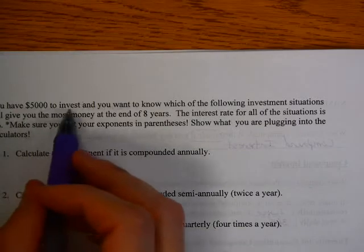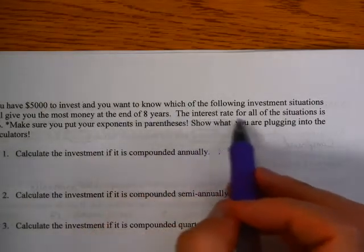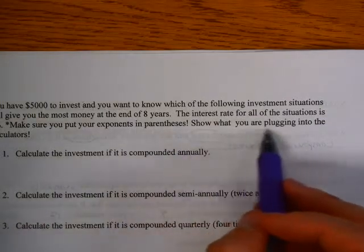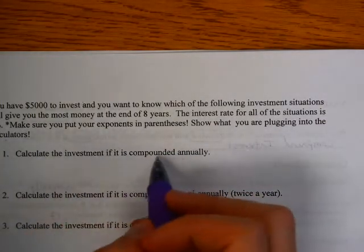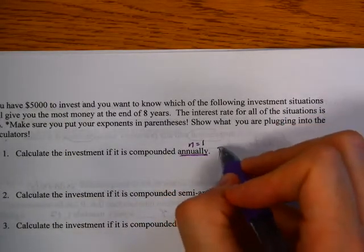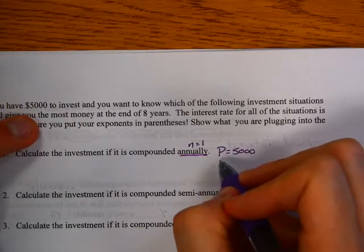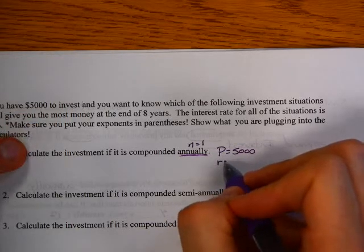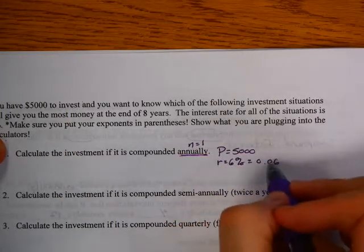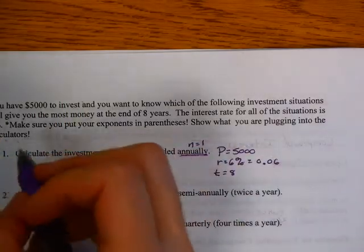You have $5,000 to invest, and you want to know which of the following investments will give you the most money at the end of 8 years. The interest rate for all the situations is 6%. Make sure you put your exponents in parentheses and show what you're plugging into the calculator. So this is calculate if it's compounded annually. That means n will be 1. And again, we're defining all our variables. The principal is 5,000. That's what we start with. Our rate is 6%, which we're going to change into a decimal. And then our time is 8 years. And I already know what n is.